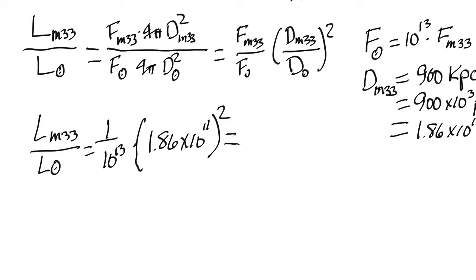If we multiply all those things together, we end up with a number of 3.5 times 10 to the 9. So M33 is 3.5 times 10 to the 9 times more luminous than the sun.